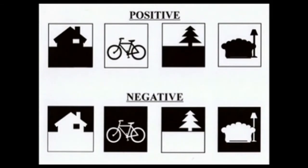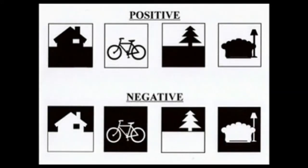In the top row, you'll see the positive symbols for a house, a bike, a tree, and a little couch with a lamp. This is the usual way that you create things in the positive. The positive is shown in the black.